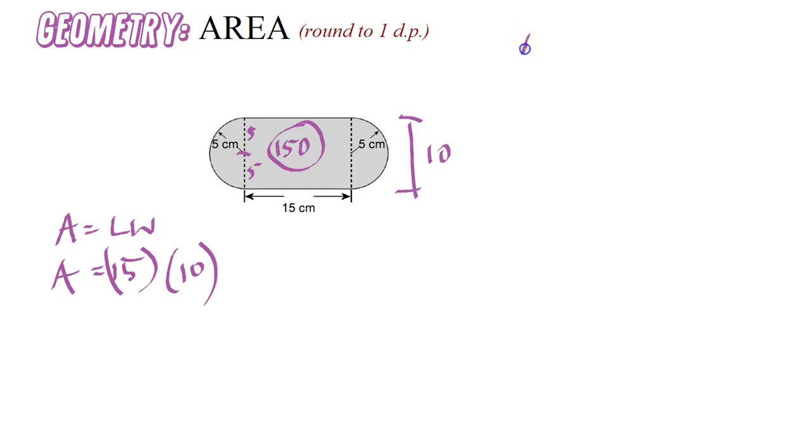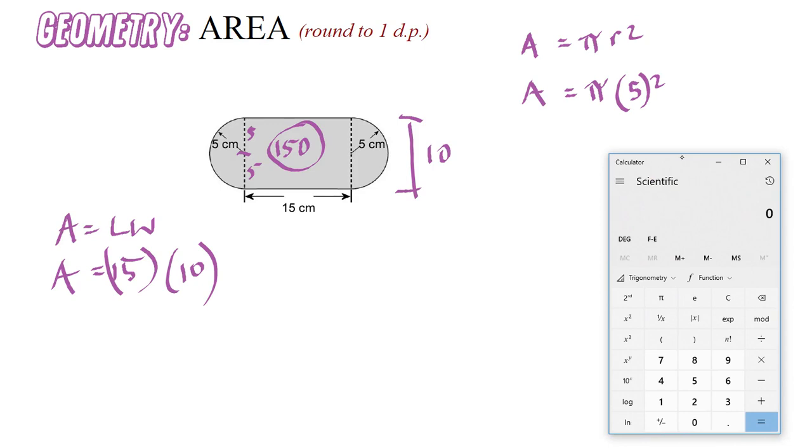The area of a circle is πr². We can use our calculator to do most of the heavy lifting. The radius has already been given to us—it's 5. So it's going to be π times 5 squared, which equals 78.539.